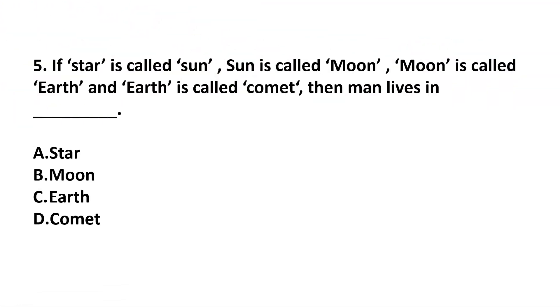Question number 5. If star is called sun, sun is called moon, moon is called earth and earth is called comet. Then man lives in dash. Man lives in earth. So, that means an earth is called comet. So, man lives in comet. So, our answer is option D. Comet.